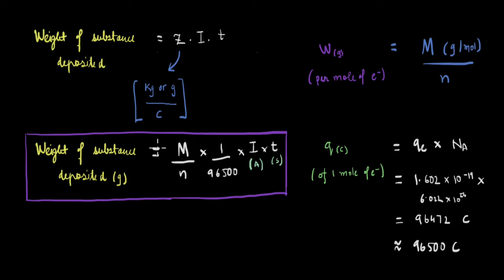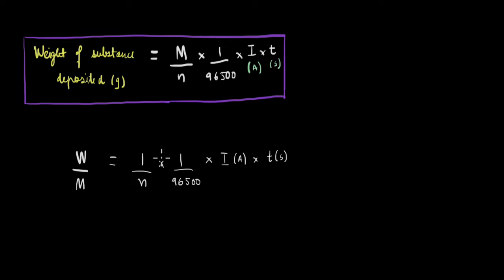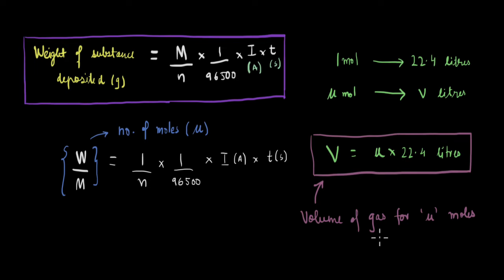Sometimes in problems, instead of a deposition at the electrode, gases are produced. You can still use this relationship to find how much gas is produced with a simple rearrangement. Taking M to the left-hand side gives W/M on the left, which equals the number of moles of gas produced. We also know that 1 mole of gas occupies 22.4 liters at standard temperature and pressure. So for μ moles of gas, we can cross-multiply to find the volume V of gas released at the electrode.